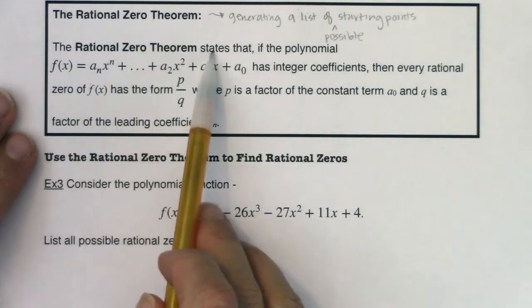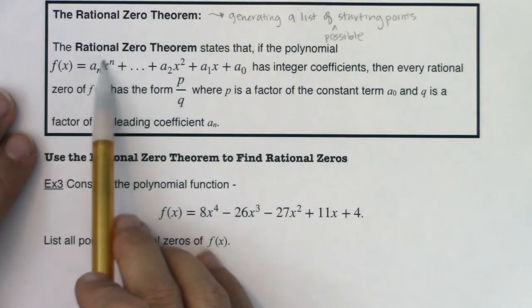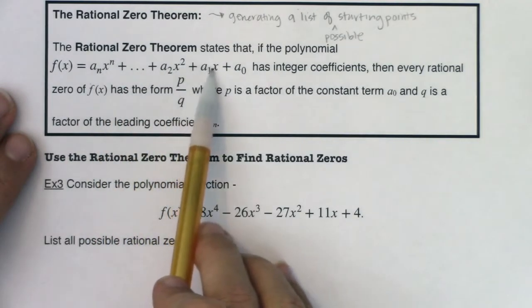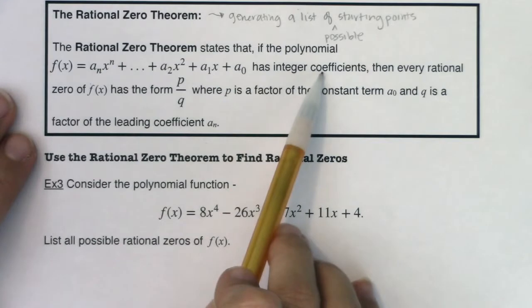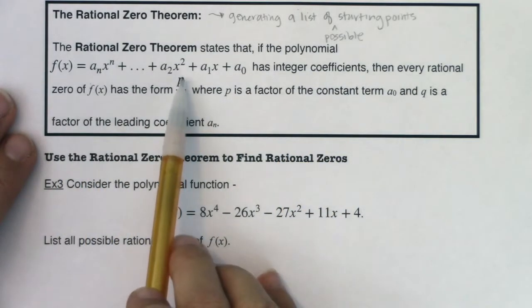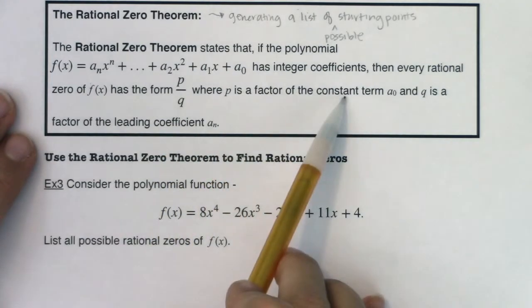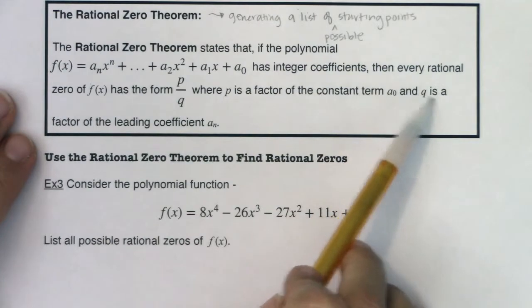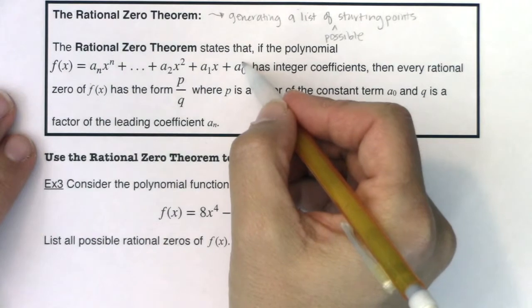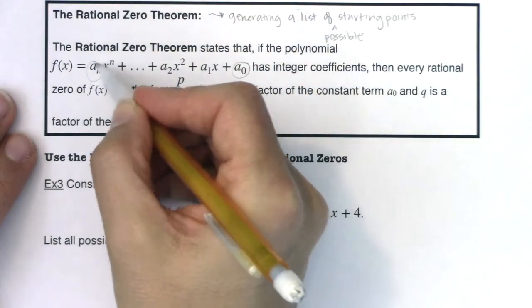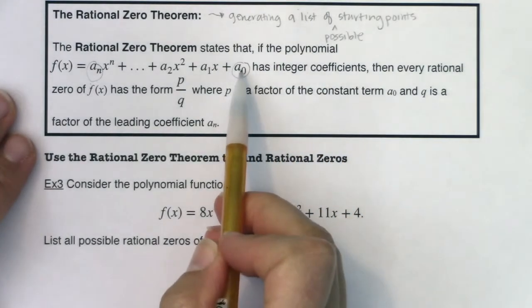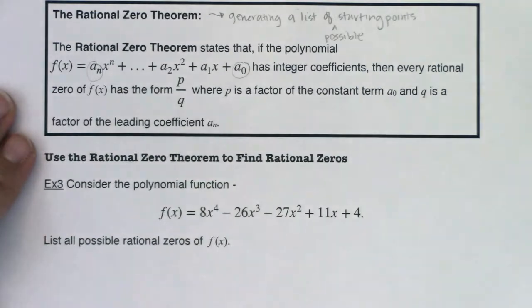So here's how this goes. The rational zero theorem states that if the polynomial, here's your polynomial, x to the power n with its coefficient, there's my lead term, all the way down descending powers of x down to the constant. If it has integer coefficients, then every rational zero of f(x) has the form p over q, where p is a factor of the constant term a sub zero, and q is a factor of the leading coefficient a sub n. So the two most important numbers that are going to come into play when we apply the rational zero theorem are a sub n and a sub zero. And we're respectively going to talk about them as p's and q's.